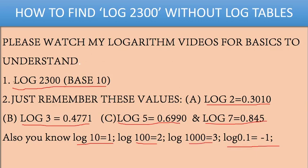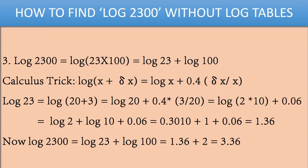Now our task is to find log 2300. There's one calculus trick we're going to apply. First, split it as log(23 × 100). We know the multiplication factor becomes an addition factor in logarithm. So log(23 × 100) can be written as log 23 + log 100. This is step 1.